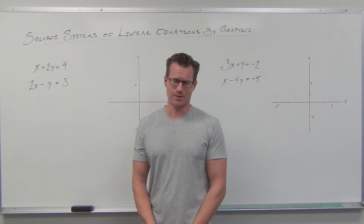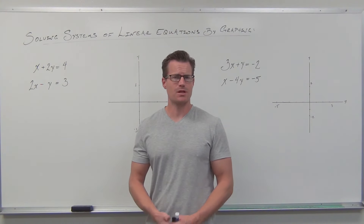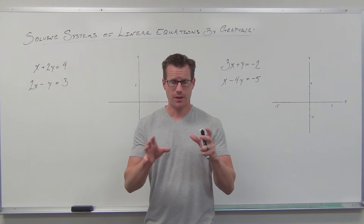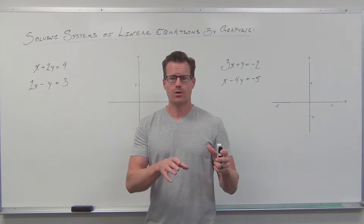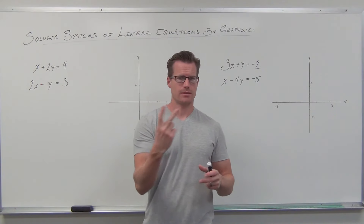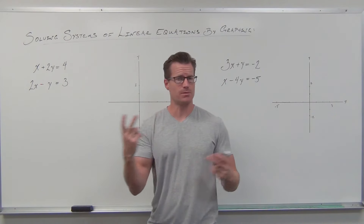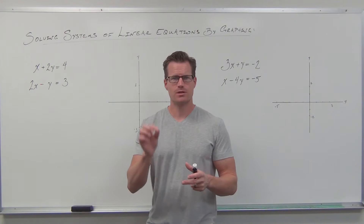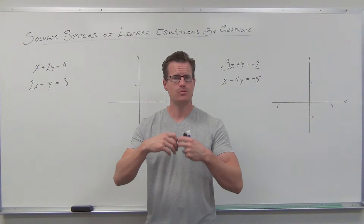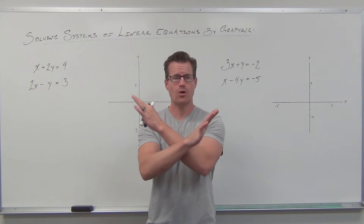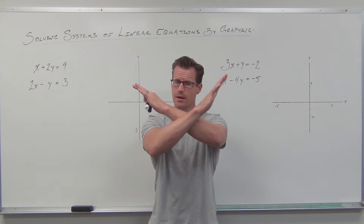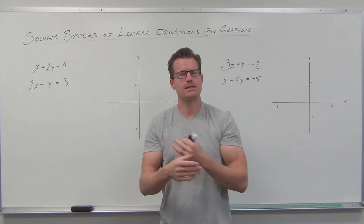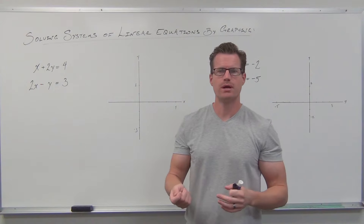We got another video on systems of linear equations and how to solve them. What we should have learned in the last video is that these systems mean two lines for us — two lines in the same graph. What we're looking for is the one point that's common to both of them, where they cross, because that's the only point that's on both lines. It's got to work in both equations.